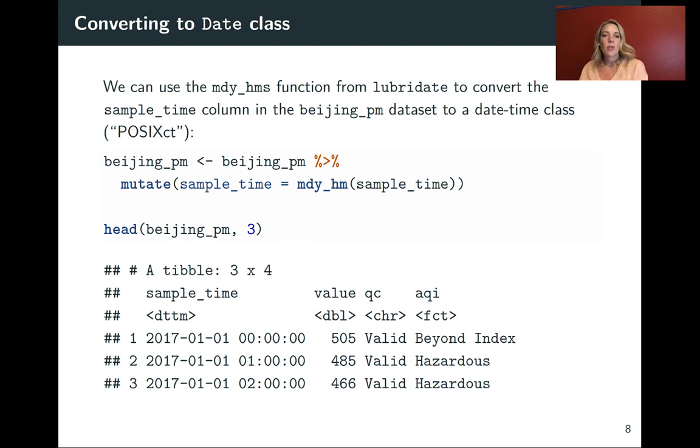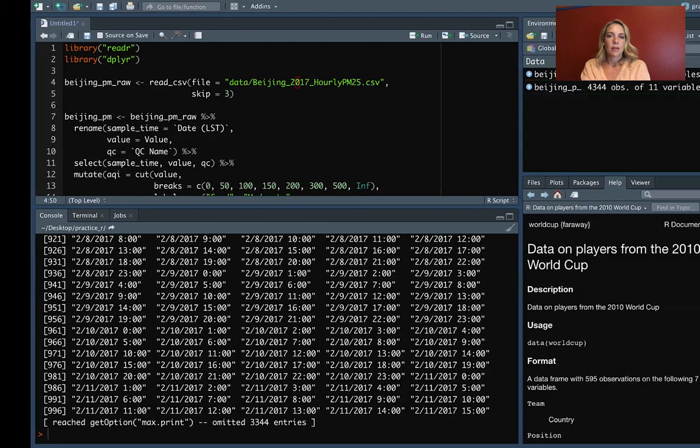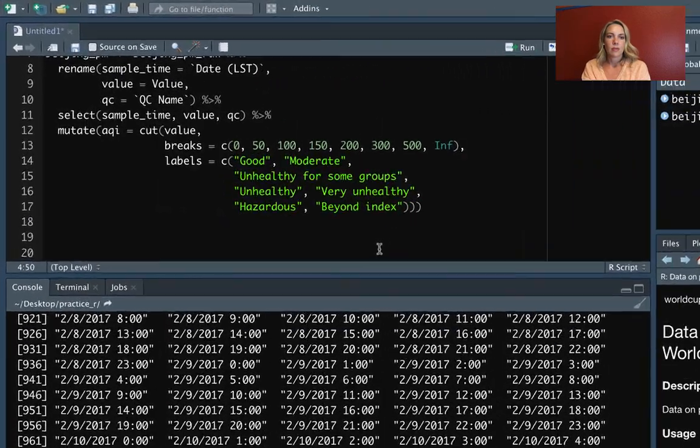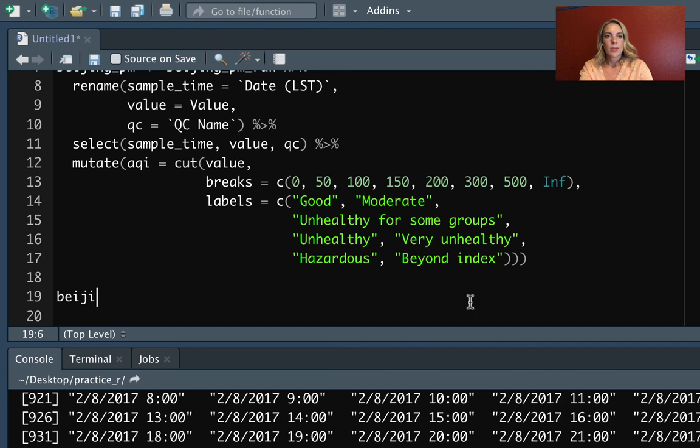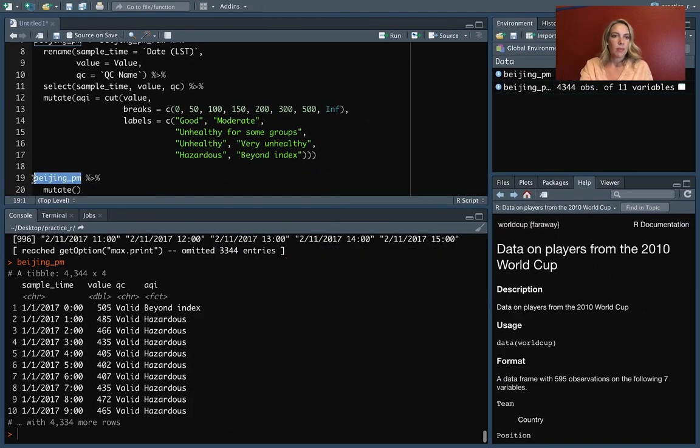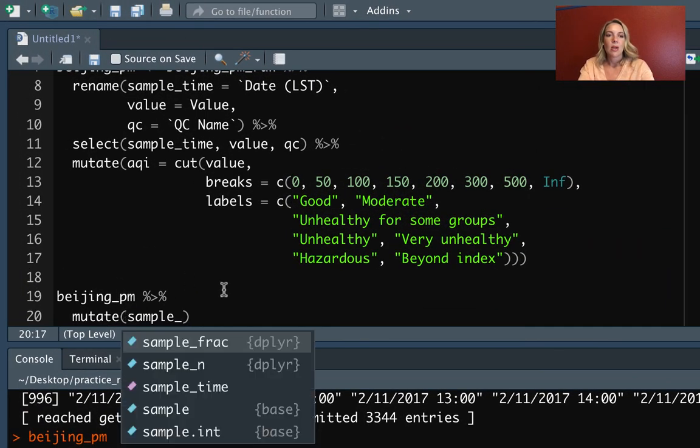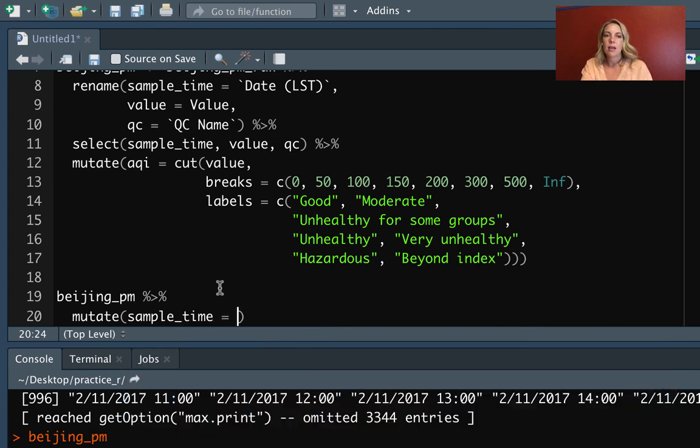So we can try that out now with the Beijing data set. We'll start with the name of the data set, and then we're going to mutate. Let's look and make sure we remember the column name. This is sample time. We want to mutate that in place. So in the mutate, if we want to take a column and change it but leave it in the same spot in the data frame with the same name, we can put that sample_time here. This is the column name we want to change, but it's also going to be a function on the right hand side of that equals sign of sample_time as well.